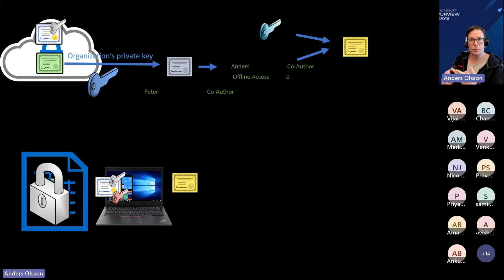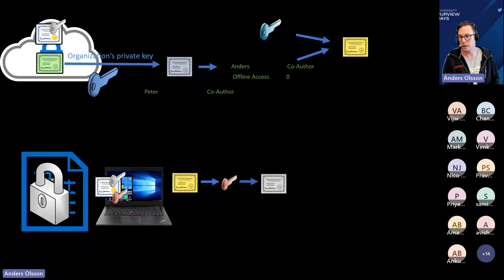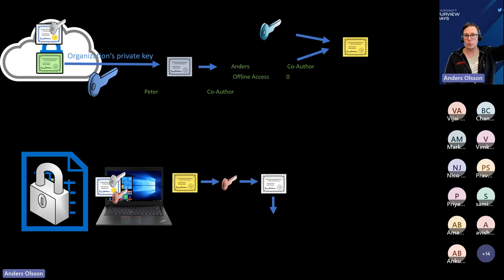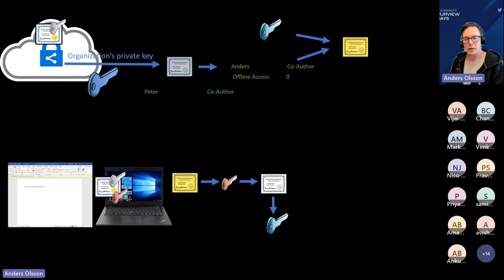The policy with the permission for the file, including the content key — the one that was used when Peter applied the encryption — and with the help of that, this file will be decrypted with the permissions that we have set on the file. This is what's happening when we are using Azure Rights Management. This is a service by Microsoft — we don't need to do anything.